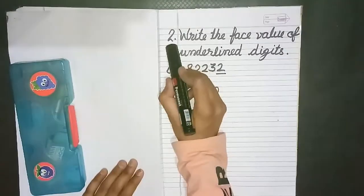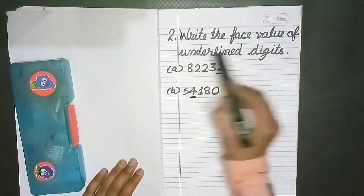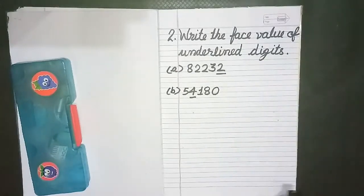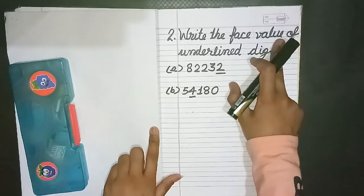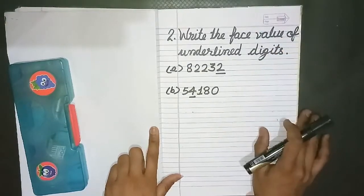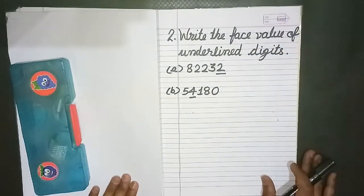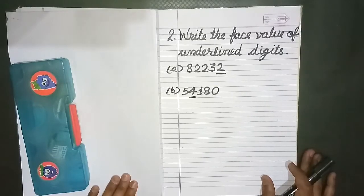Second is write the face value of underlined digits. So let me tell you what is the face value here. Face value of any number is given by the number itself. Say for example, face value of 3 is 3, face value of 9 is 9, and face value of 7 is 7.